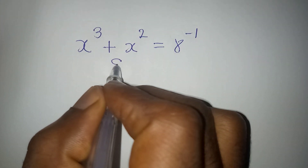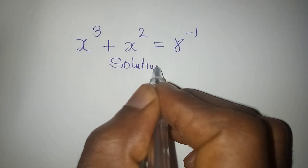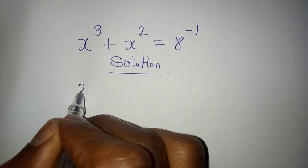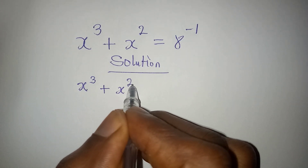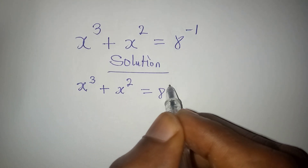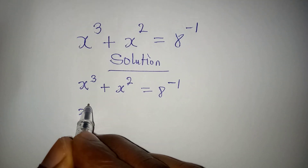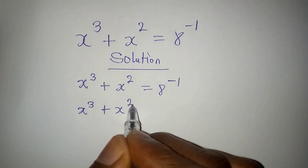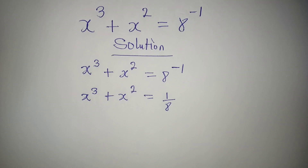Hello everyone, let's provide a solution to this Olympiad mathematics problem: x to the power of 3 plus x to the power of 2 equals 8 to the power of negative 1, which is the same as 1 over 8.